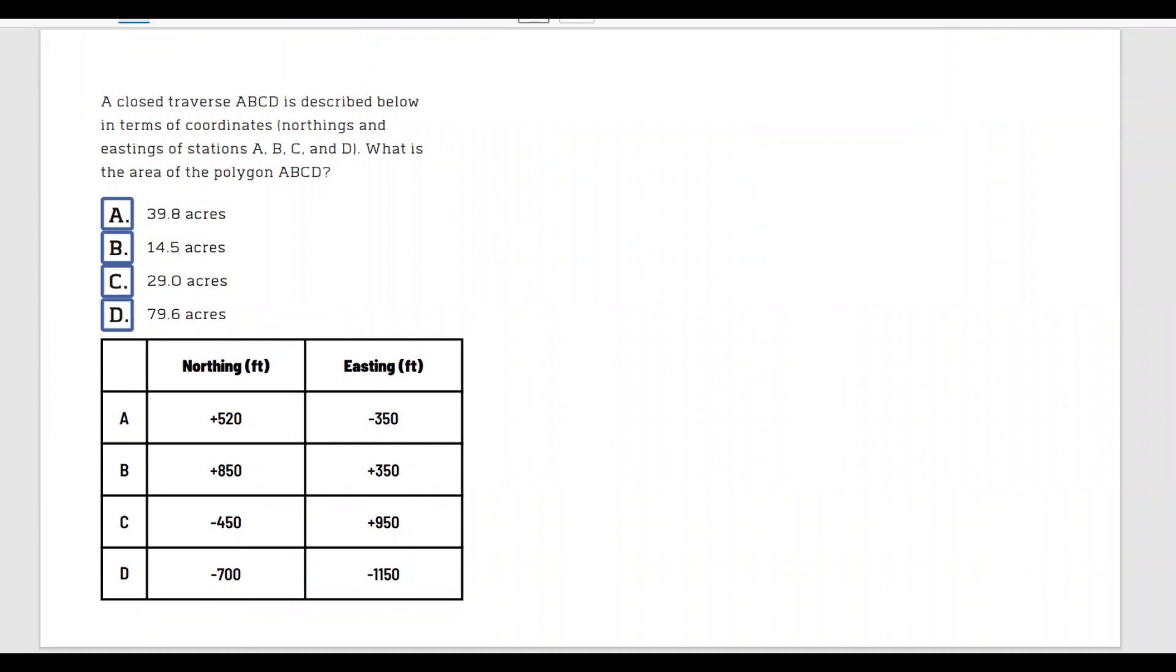A closed traverse A, B, C, D is described below in terms of coordinates, northing and easting of stations A, B, C, and D. What is the area of the polygon ABCD?